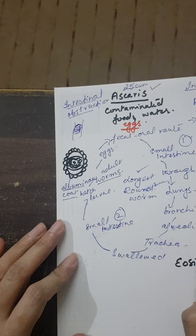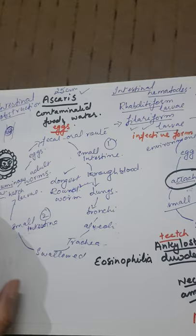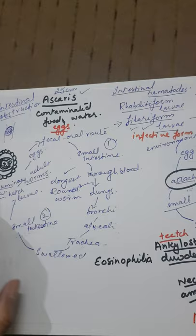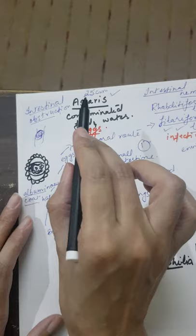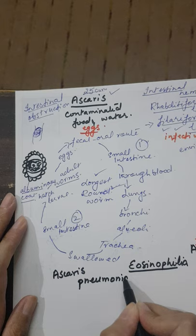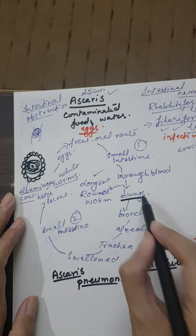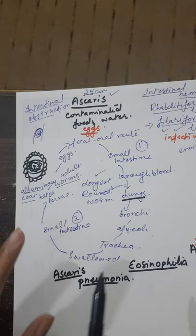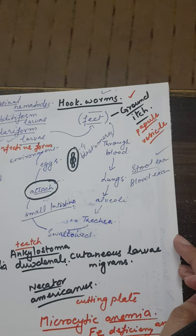One important finding associated with Ascaris infection is eosinophilia. There is also a condition called Ascaris pneumonia — eosinophils accumulate in the lungs when Ascaris lumbricoides passes through the lungs. Hookworms also pass through the lungs but primarily cause ground itch and cutaneous larva migrans on the skin, and use their cutting plates in the intestine to cause blood loss.